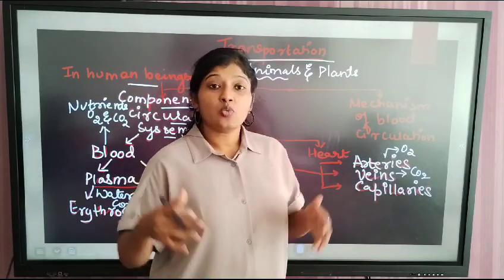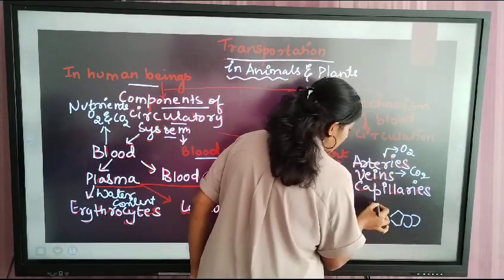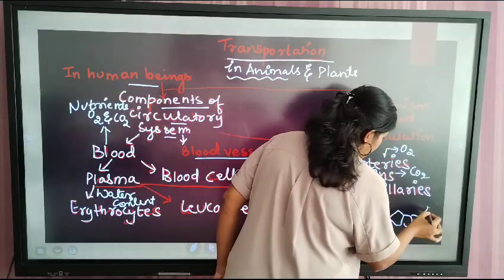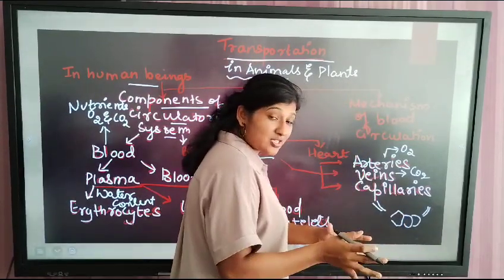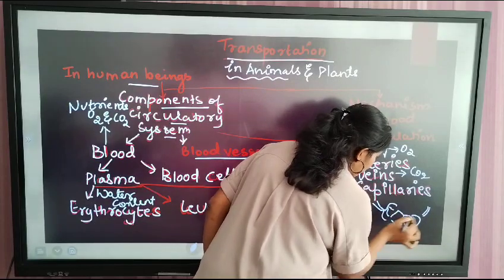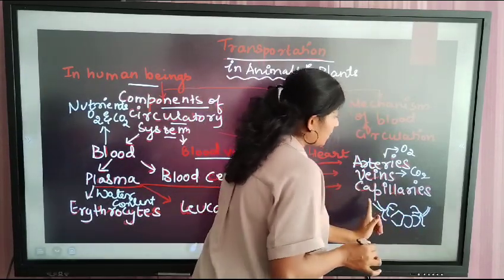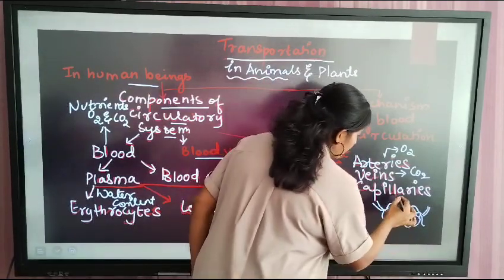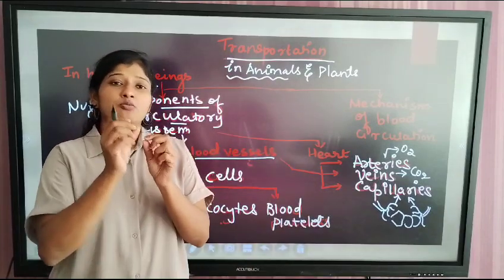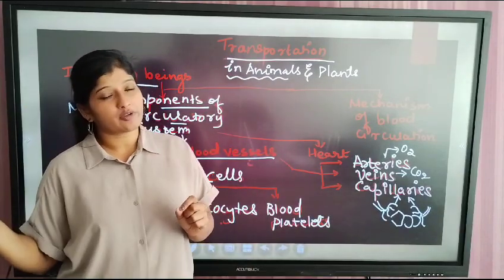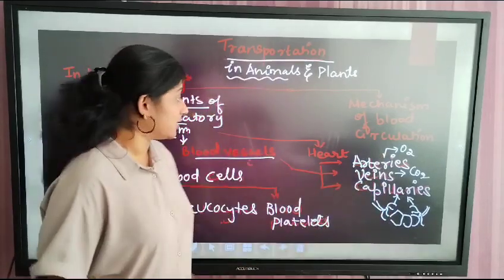Capillaries are the ones which diffuse gas at the tissue level. Arteries and veins cannot directly diffuse gas to the cell — they have to undergo further branching. This further branching of vessels gives us capillaries — thin tubes. So these are the three types of blood vessels: arteries, veins, and capillaries.